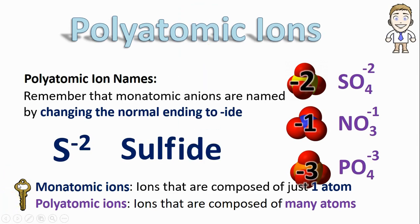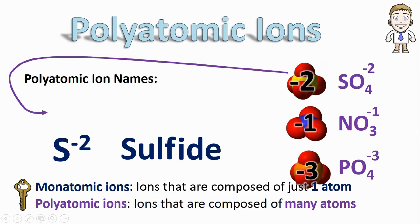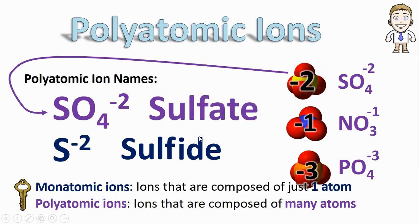A similar thing happens with our polyatomic ions. Take SO4, for example. Because it contains a sulfur atom just like the sulfide, we're going to use that same S-U-L-F, sulf, prefix. We just can't call it sulfide. Generally polyatomic ions are given the ending ate, so SO4 minus two is called sulfate.